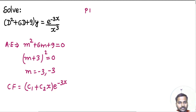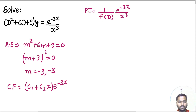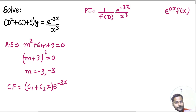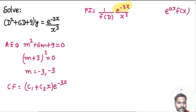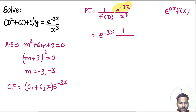Coming to the particular integral, that will be 1 upon f(D) operating on your RHS, which is e to the power minus 3x divided by x cubed. Your RHS is of the form e^(ax) multiplied with some function of x. So what we do in this type of case is we take this e^(ax) outside of the operator and make f(D) become f(D + a). Here a is minus 3, so we get f(D minus 3), with 1 over x cubed as it is.